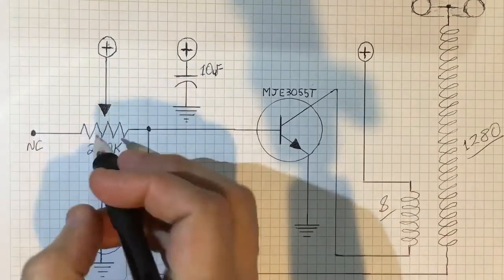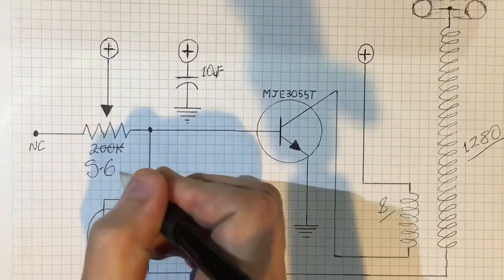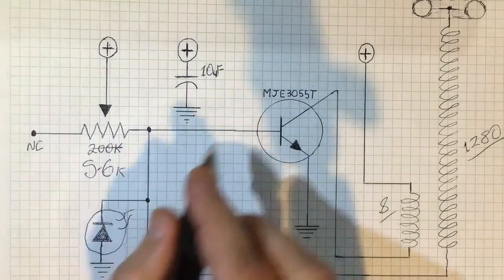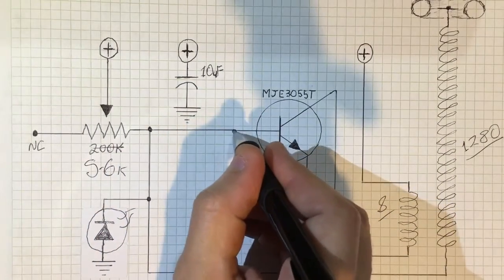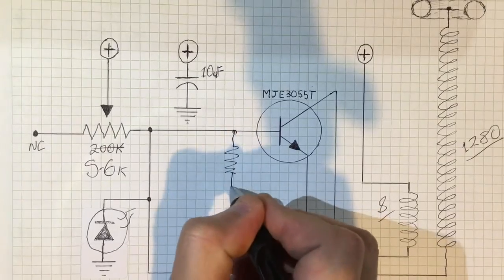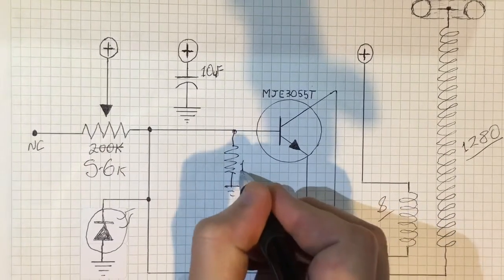For this one, this is only about 5.6K, or 5K6, whichever you like to call it. And then to pull the transistor normally low, I've added 180K, a very high value resistor, to ground.